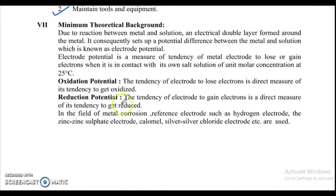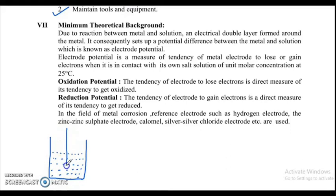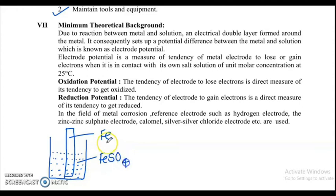Now, what is electrode potential? In a beaker, a metal salt solution is taken and a metal rod of the same metal is dipped in it — for example, an Fe rod is dipped in its own salt solution. If using copper, you would use copper sulfate or copper chloride. When a metal is dipped in its own salt solution, two opposite processes take place simultaneously.